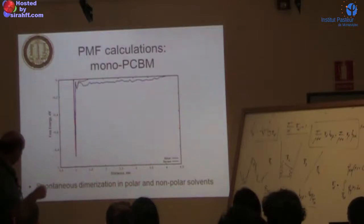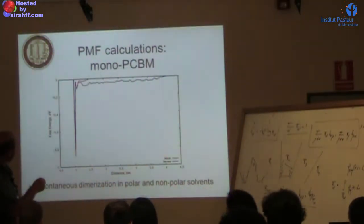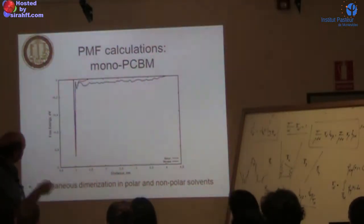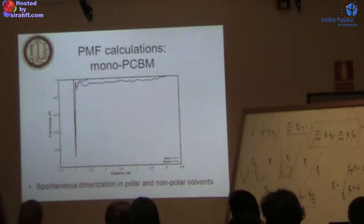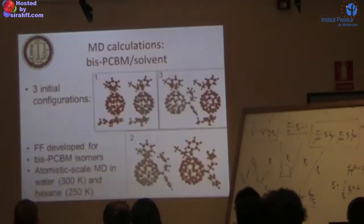For water, there's one big dip - they just cluster together. In reality it would precipitate out if you had more than two. For hexane there's a dip which is not that deep, then some range. So hexane is a weak solvent for PCBM, which agrees very well with experiment.